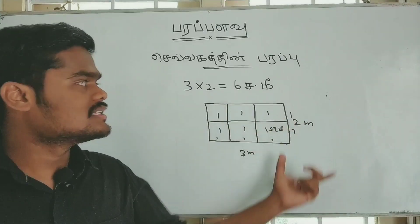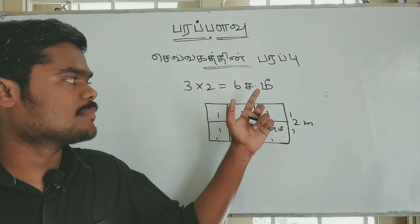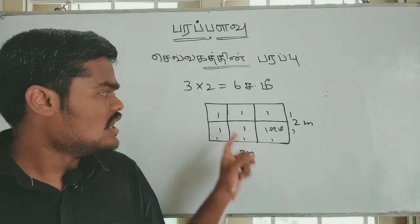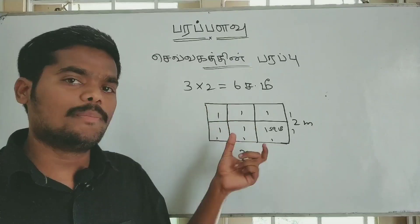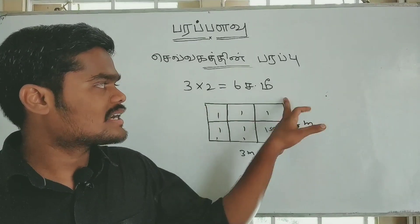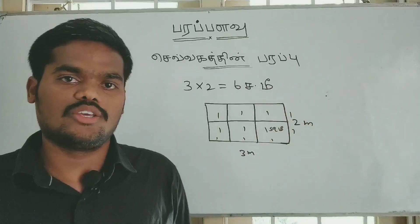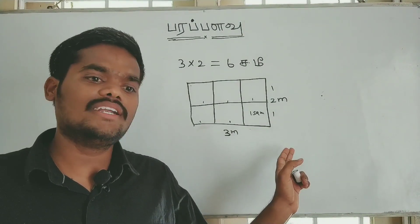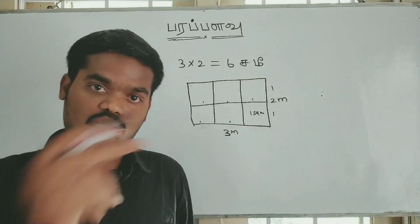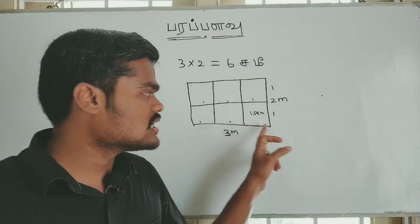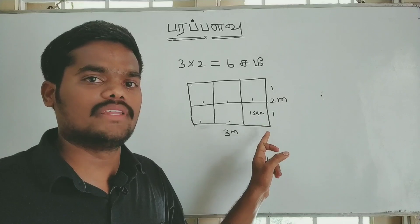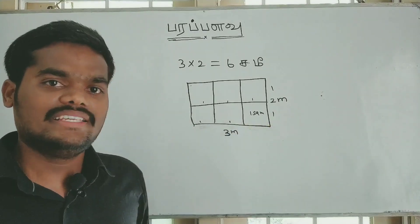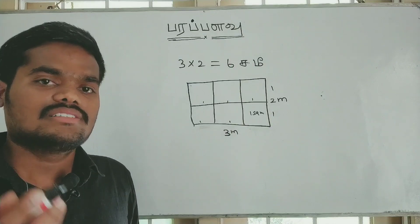I'm going to tell you how many meters we can count. 1 meter, 1 square meter, 3 meters, 2 meters. 1 square meter, 6 meters, 1 square meter. So 3 meters by 2 meters gives 6 square meters. This equation is used with 2 meters.